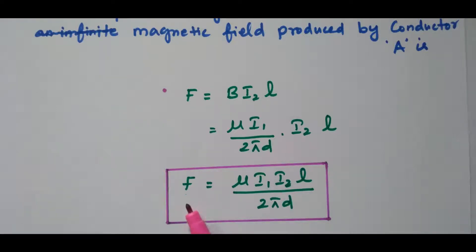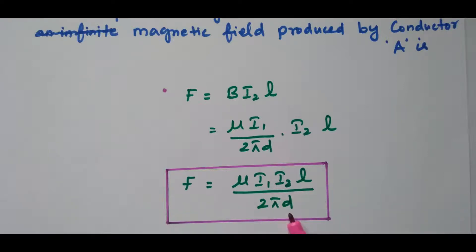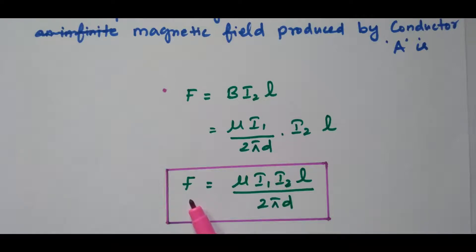The force between the current carrying conductors is F equals μI1I2L divided by 2πD. This force depends upon the current in conductor A, the current in conductor B, the length of the conductor, and the diameter of the circular loop. These parameters decide the force between the conductors. This is the force between two conductors having only one circular current loop.